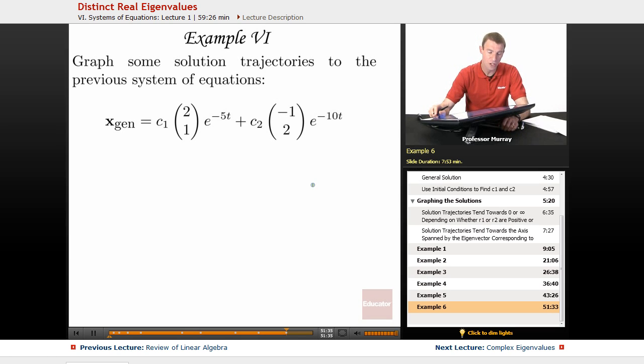We're going to graph some solution trajectories to the previous system of equations. So this is the general solution that we figured out in the previous system. If you're not sure where this comes from, go back and rewatch example 5. That was where we figured out this general solution. We started out with a matrix there and we found its eigenvalues and eigenvectors, and that's how we got this general solution. So what we're doing in this example is we're going to try to graph this.